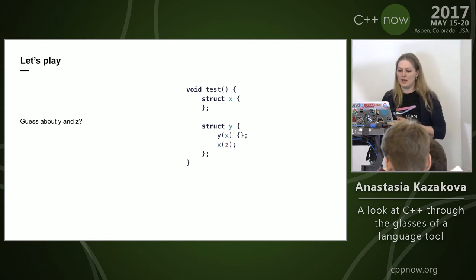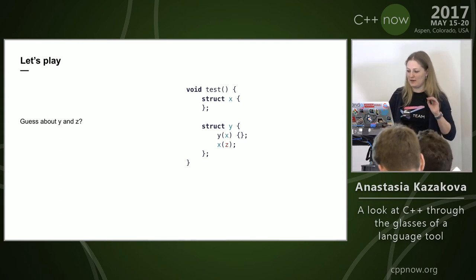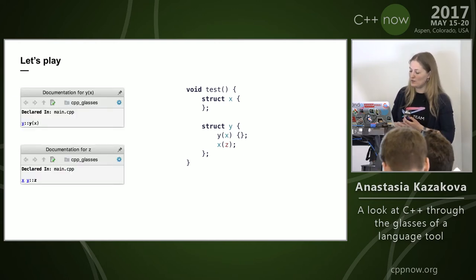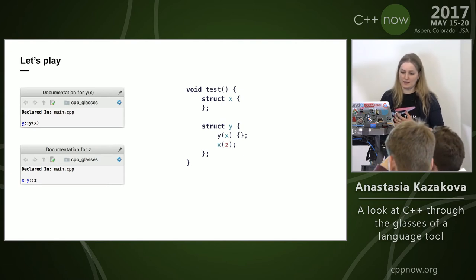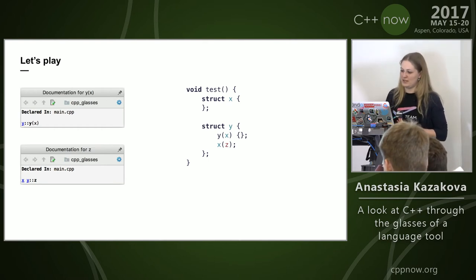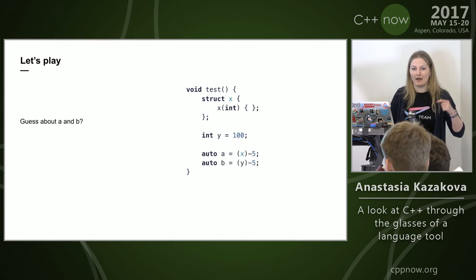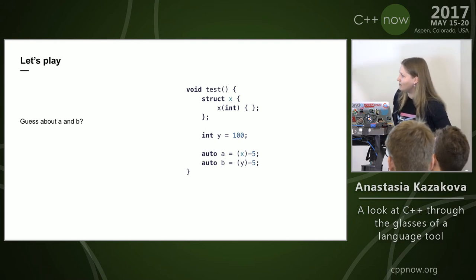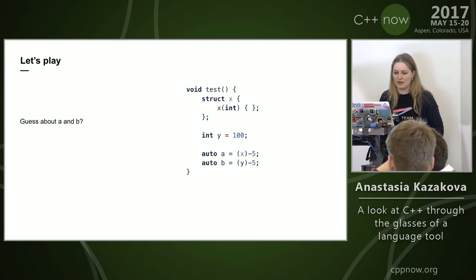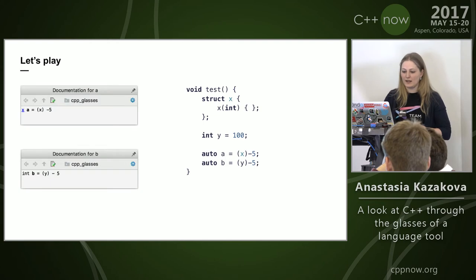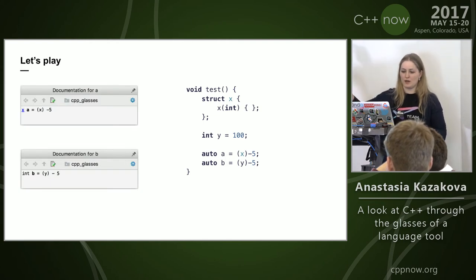Here's another example — two lines with x and z that look very similar. The first line is actually a constructor call with parameter x, and the second line is a variable z with type x. They look alike but are different. Another example: auto a equals x minus 5, and b equals something minus 5 — but the first line is actually a cast and the second line is an expression.